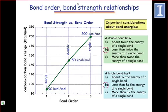Bond strength is directly related to bond order. However, the relationship is not perfectly linear, and this has important consequences on reactivity.